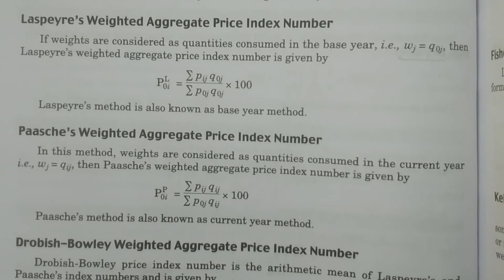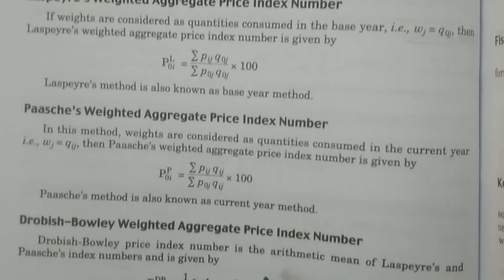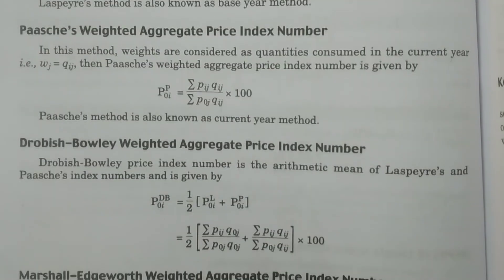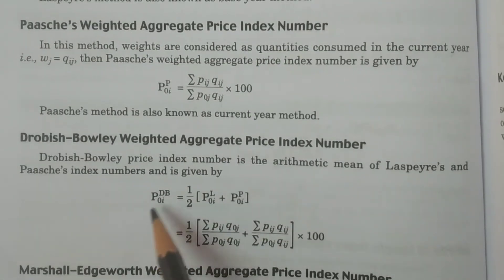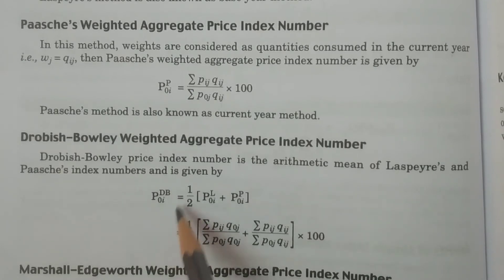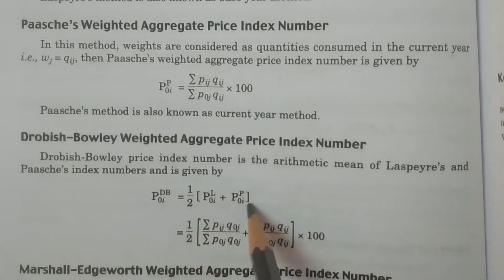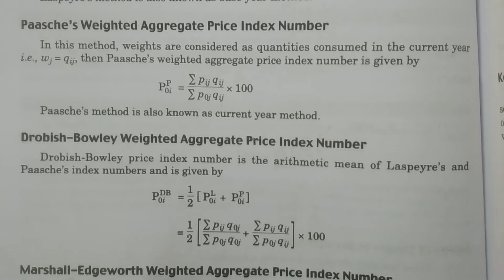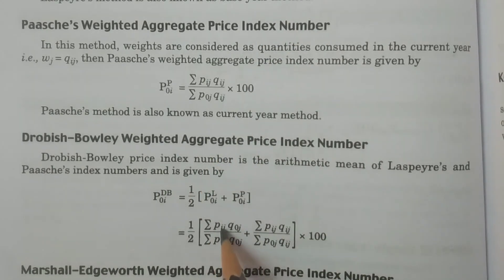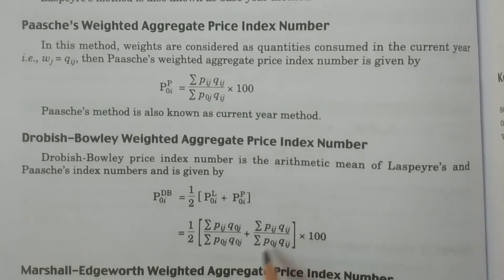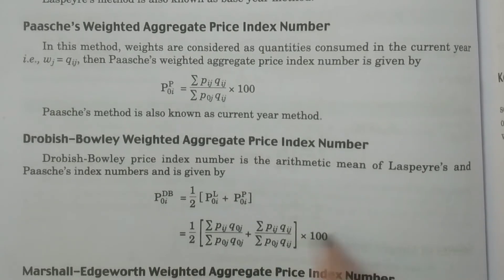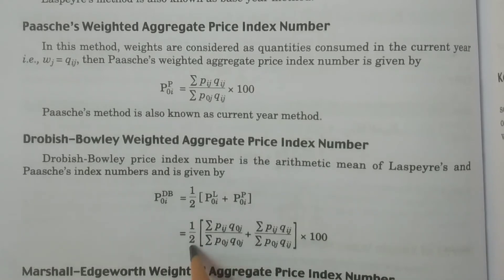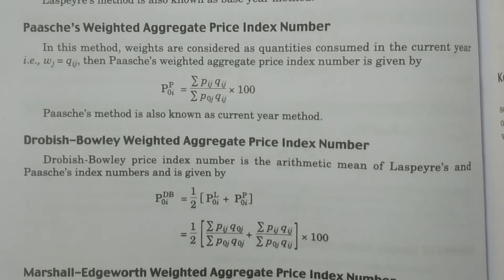Drobisch-Bowley weighted aggregate price index number P0I(DB) is the average of Laspeyres and Paasche: (1/2) × [summation PIJ·Q0J / summation P0J·Q0J + summation PIJ·QIJ / summation P0J·QIJ] into 100.